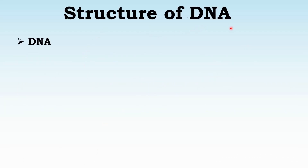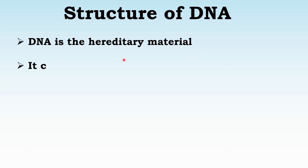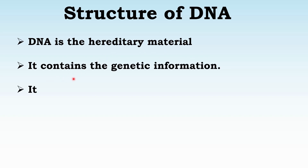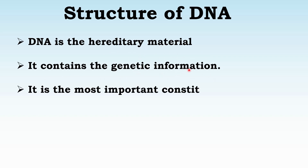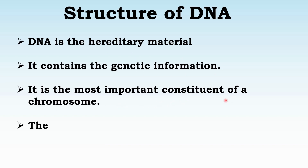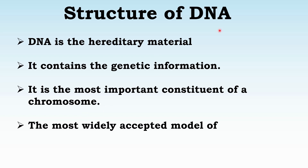DNA is the hereditary material — the unit that carries hereditary traits. It contains the genetic information. The hereditary material contains genetic information. It is the most important constituent of a chromosome; the most important component found in a chromosome is DNA.